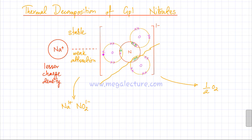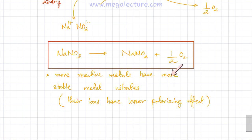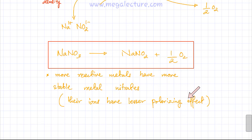Let me write down the equation: sodium nitrate decomposes to form a metal nitrite and gives off an oxygen molecule. The decomposition of group 1 nitrates is very, very hard. The general rule is that more reactive metals are going to have more stable metal nitrates — it's more difficult to decompose those metal nitrates simply because the ions have a lesser polarizing effect on the nitrate ion, which makes the nitrate ion more stable and less prone to decomposition.